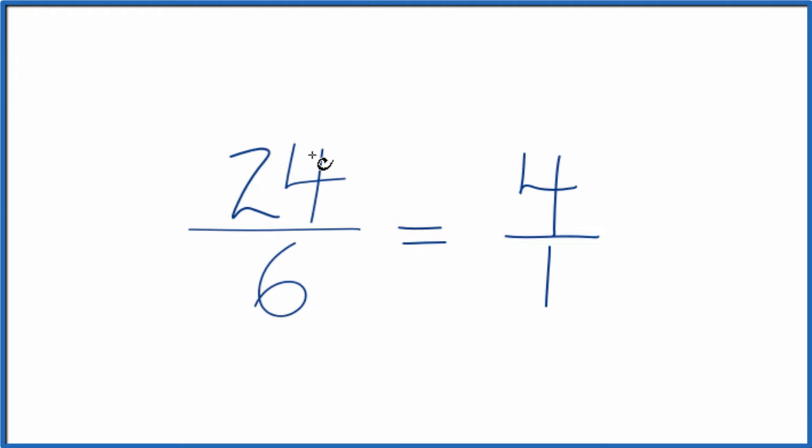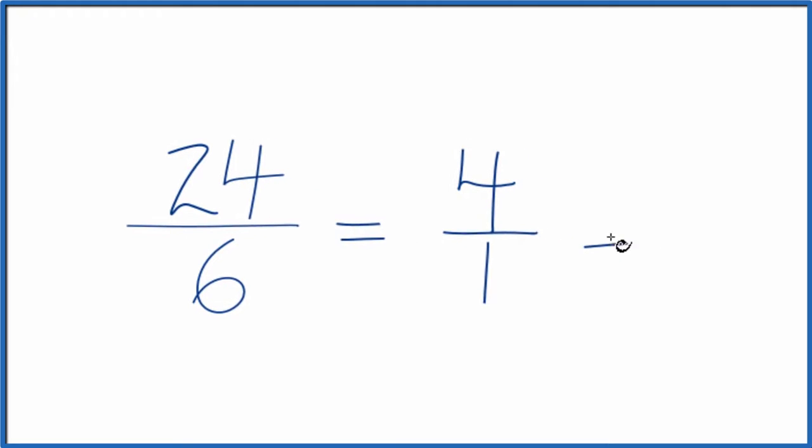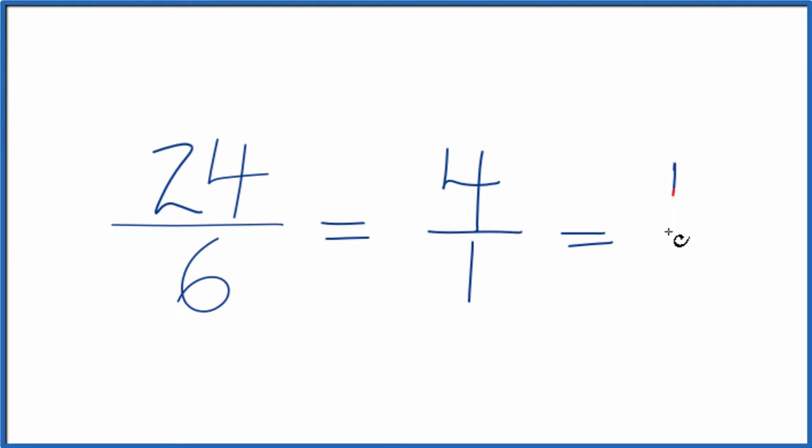So we've simplified the fraction 24 sixths down to 4 over 1. And 4 over 1, that's just dividing 4 by 1. 4 divided by 1 is just 4. So we could call it the whole number 4.